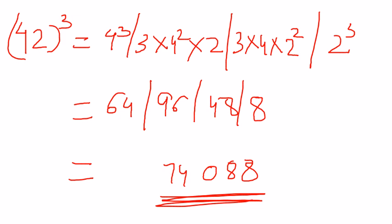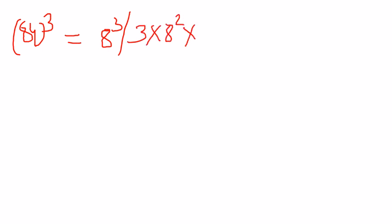Let's take a final example. This time cube of the number 84. Again, a cube. In this case 8 cube plus 3a square b, 3 cross 8 square, 8 square cross 4. Slash 3ab square, 3 cross 8 cross 4 square. And finally the b cube, 4 cube.